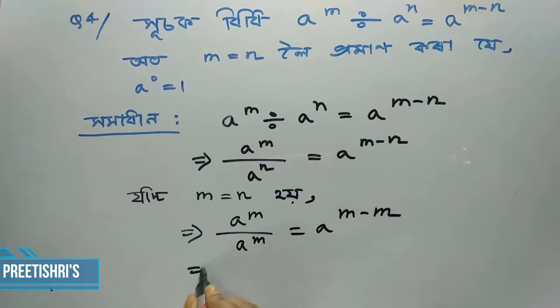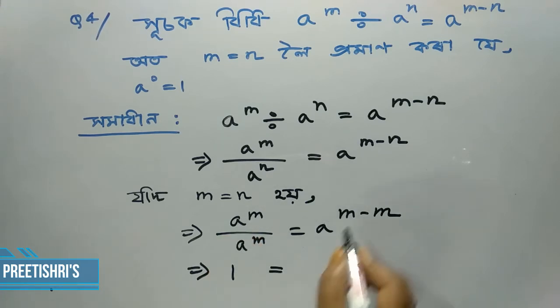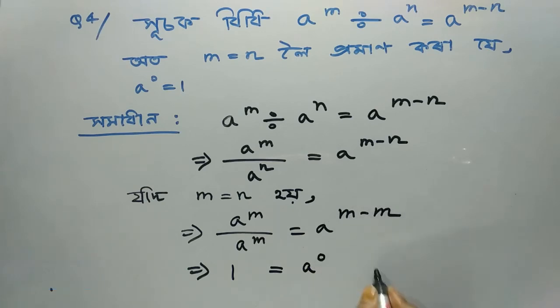A to the power m divided by a to the power m — one divided by one equals one, so we get equal to a to the power m minus m, which means a to the power naught. Therefore a to the power m and naught, m equal to a to the power m, and a naught equal to 1.